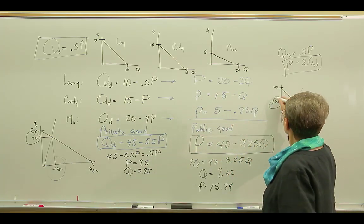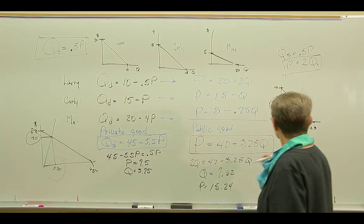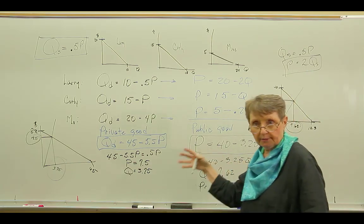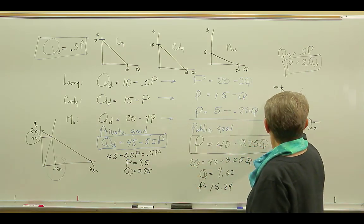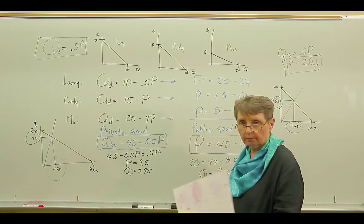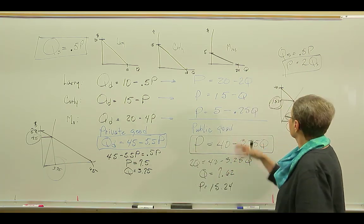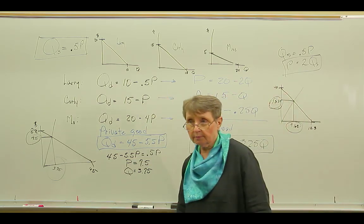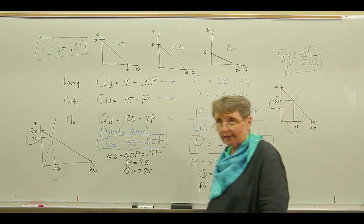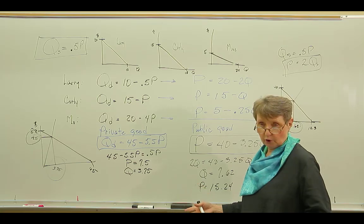With public goods, we still have this problem. How are we going to pay for this? 7.62 is the optimal number. And 15.24 is the price. And so we're going to have to collect that money from Larry, Curley, and Moe, and we have to figure out how to do it. And that's the next difficult problem.